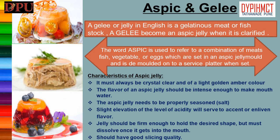Characteristics of aspic jelly: 1. It must always be crystal clear and of a light golden amber color. 2. The flavor of an aspic jelly should be intense enough to make the mouth water. 3. The aspic jelly needs to be properly seasoned with salt. 4. A slight elevation in the level of acidity will serve to accent and enliven the flavor. 5. The jelly should be firm enough to hold the desired shape, but must dissolve once it gets into the mouth. 6. It should have good slicing quality.